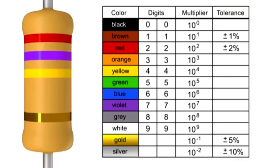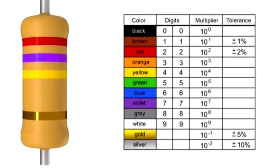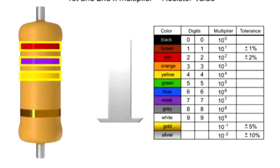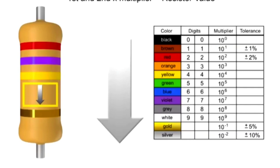You read resistor bands beginning with the end that has the most bands. A space between the third and fourth bands also indicates the reading direction.